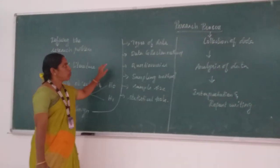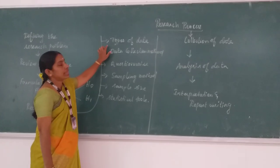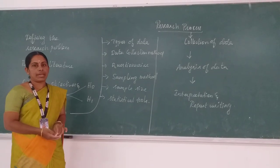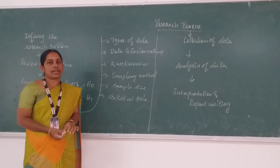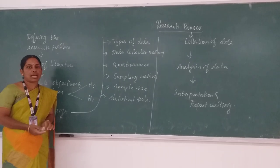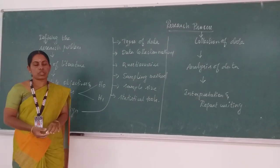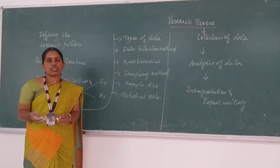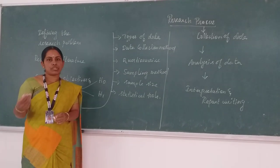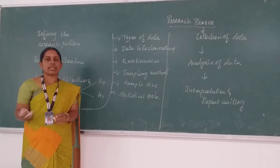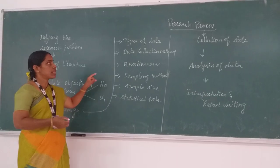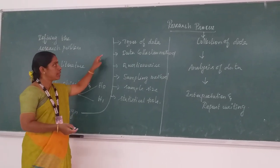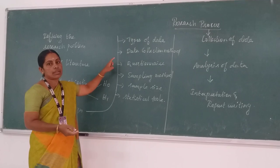First we see what types of data are available. We have two types of data: primary data and secondary data. Primary data means we collect first-hand information. If you choose secondary data, we collect information from published resources — that is, books, magazines, journals, and websites. The researcher chooses any one type of data for their research work.